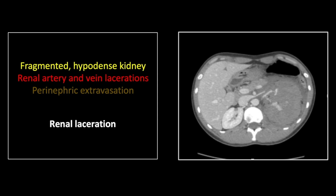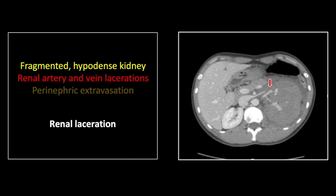On the next cut down, you can see a large amount of heterogeneous fluid occupying the left renal fossa, and you can see the disrupted ends of the distal left renal vein and left renal artery, both seen here. There are also regions of extravasation emanating from those disrupted vascular ends.